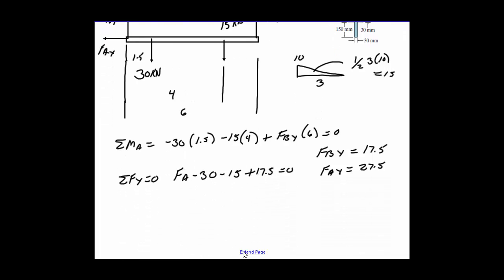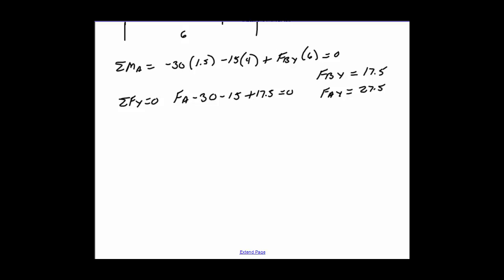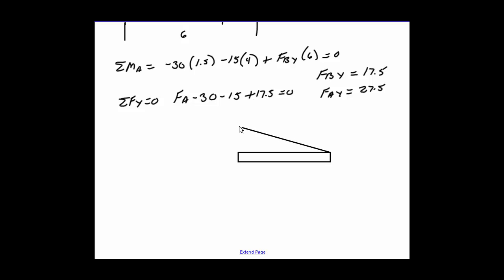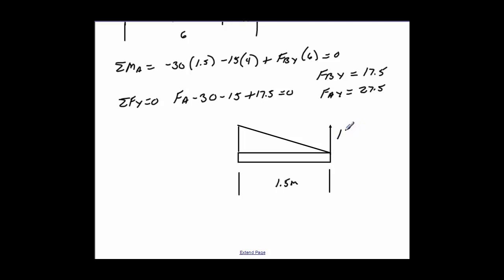Going to the right side of the cut at C. I'm going to make sure we have the load here — a distributed load coming in. The distance from here over is 1.5. And we have the force at B coming up, which is 17.5 kilonewtons.